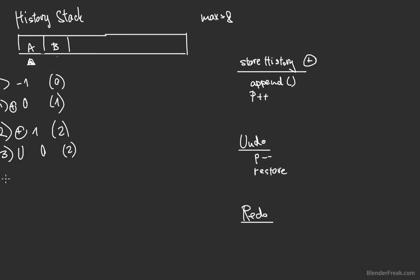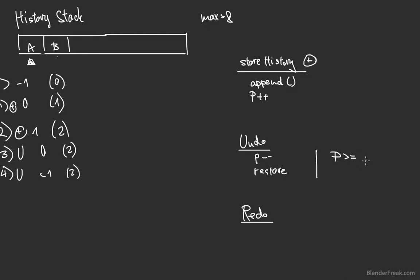What if we do undo again? Then our pointer is going to be minus one, which is outside of the available indexes in the history stack, so we would get something like a value exception. That means we need to check if the pointer is greater than or equal to zero, otherwise we will not be able to undo.